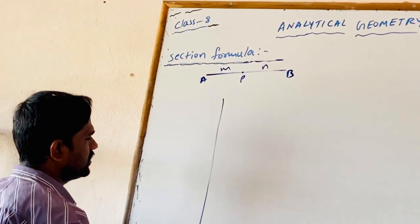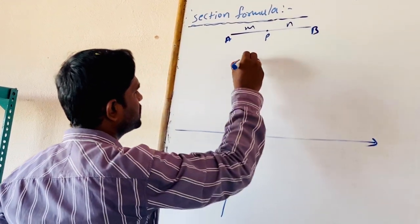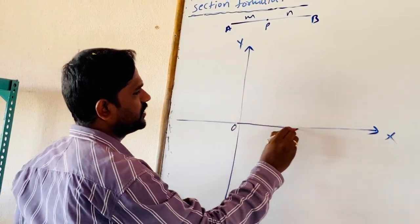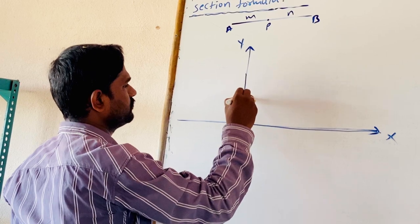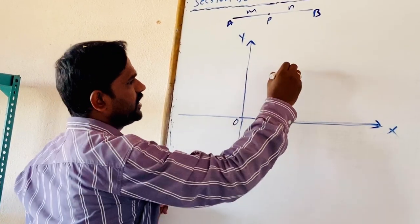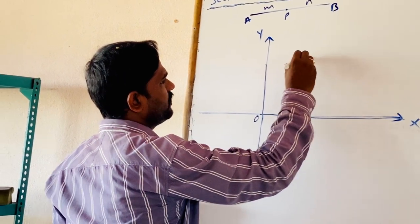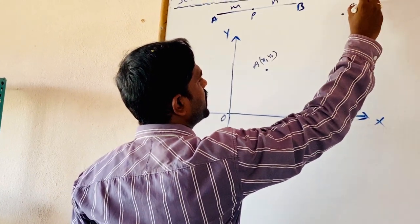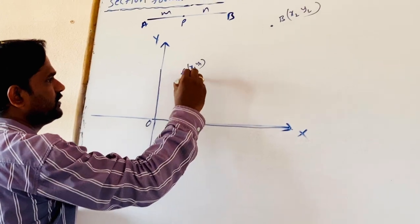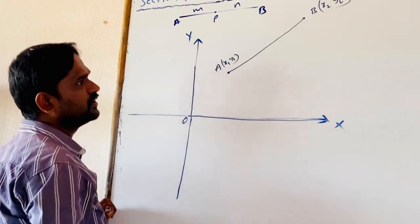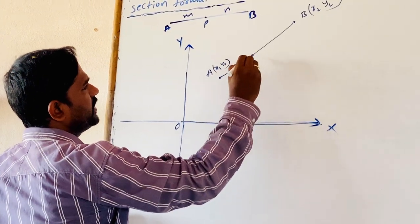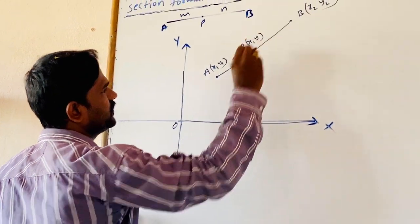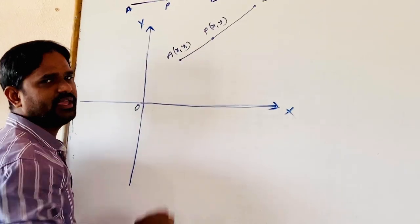Let us draw two mutually perpendicular lines which are known as X and Y axes. Their intersection is known as the origin. Let us take a point A with coordinates X1, Y1 and a point B with coordinates X2, Y2. By joining them, we will get a line segment. We mark a point P on the line segment with coordinates X comma Y. We want to find the coordinates of P.